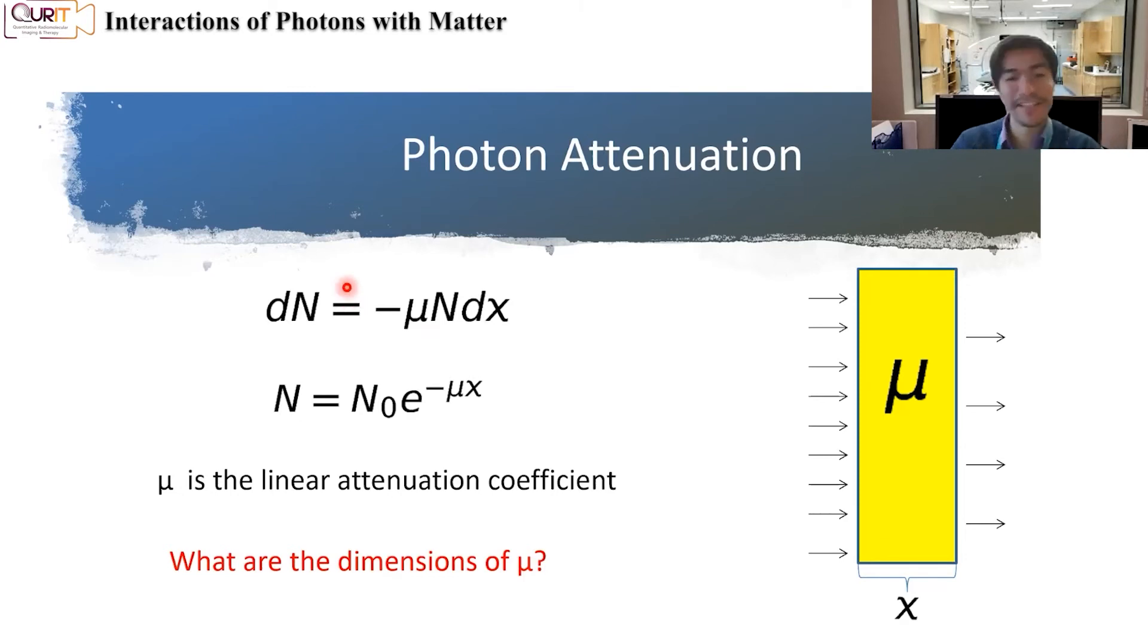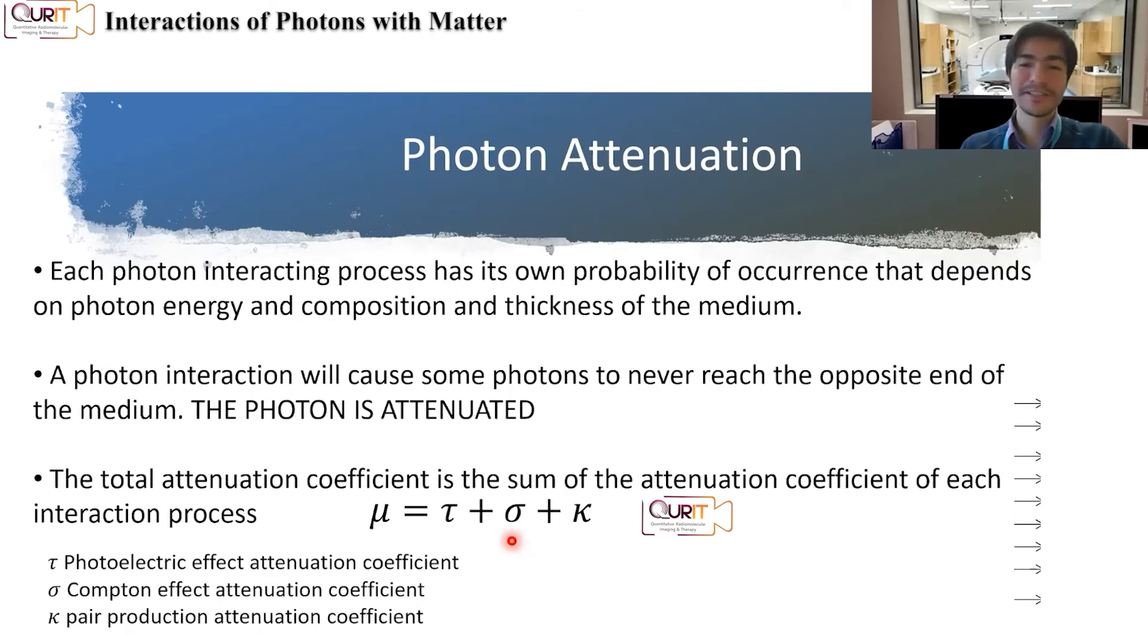So if you think similar to radioactive decay, if you have an initial number of photons that are traveling in a thickness x of a material, we have a constant that we call the linear attenuation coefficient. If you solve that differential equation, you can see that the number of photons that you obtain after traveling through the material has to do with the initial number that went through the material and that mu and the distance. What are the dimensions of that mu? That's the linear attenuation coefficient. So we need to have this exponent dimensionless. So if mu x is units of length, then the dimensions of mu are one over length. So it can be, for example, one over centimeter or one over micrometer. We typically do it in one over centimeter.